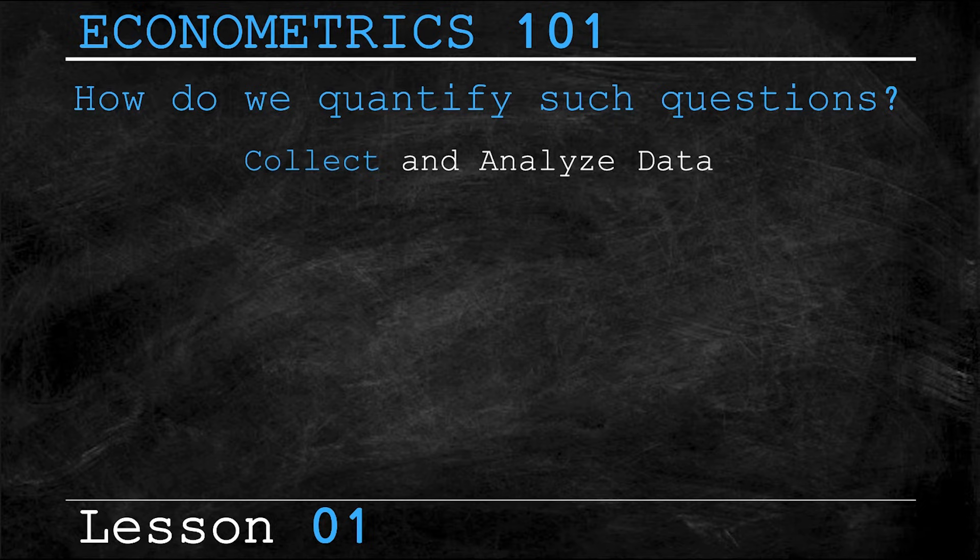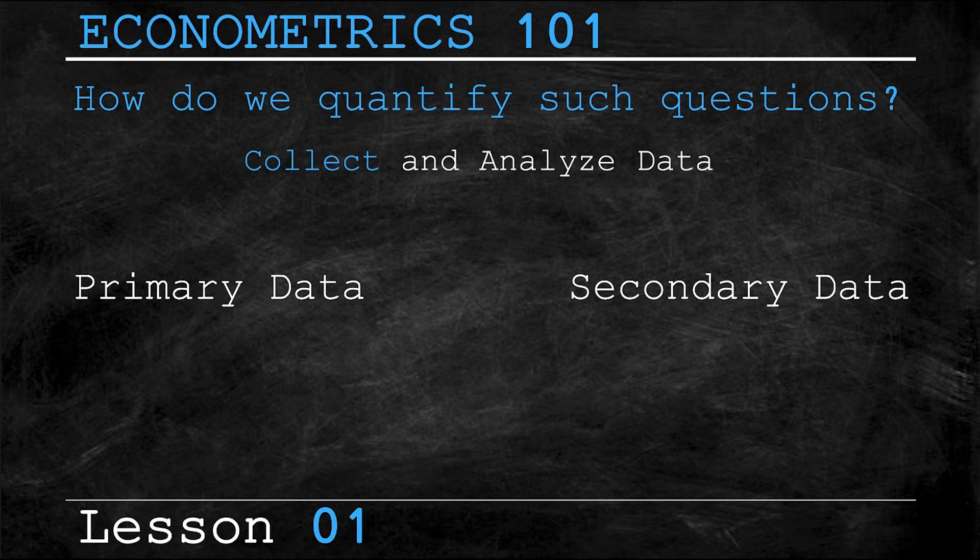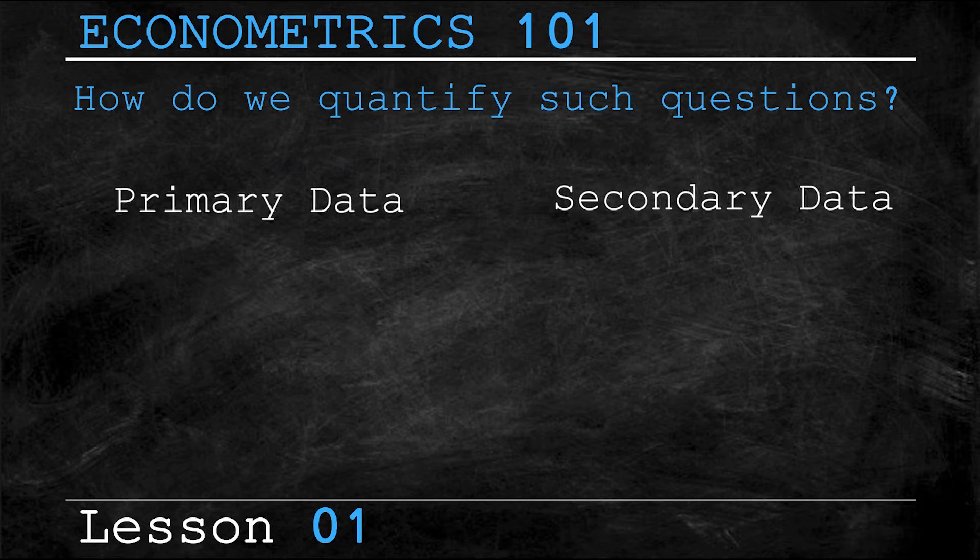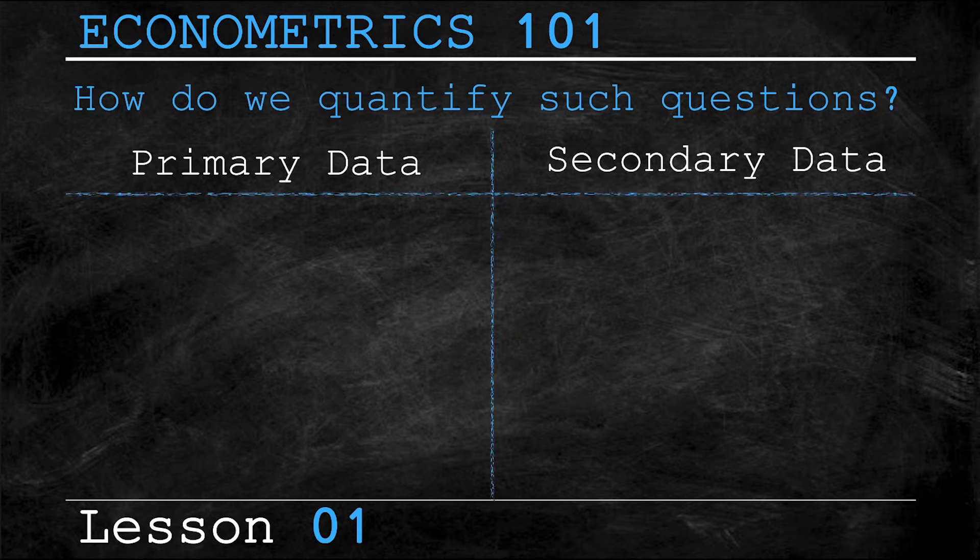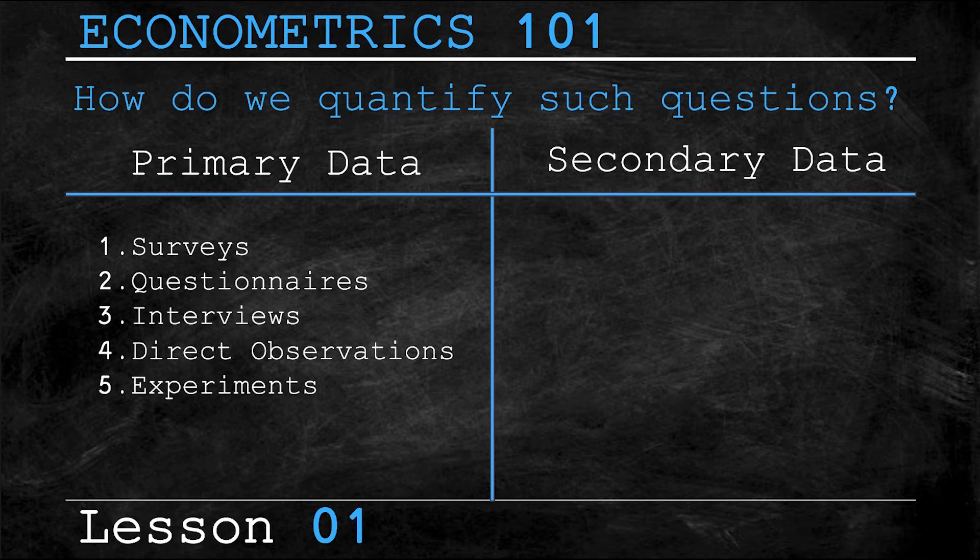We'll focus on the collect part first. There are two types of data that you can collect: there's primary data and there's secondary data. Now, primary data is data that you've collected yourself firsthand, and you can collect primary data in a variety of ways, including surveys, questionnaires, interviews, direct observations, and of course, experiments.